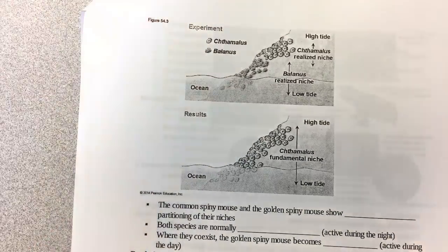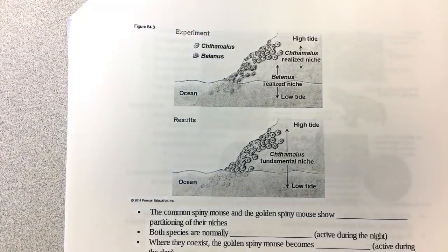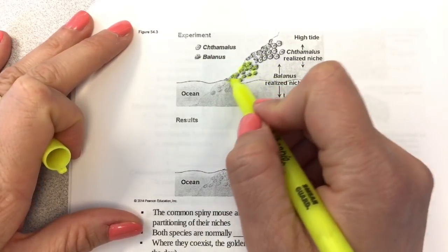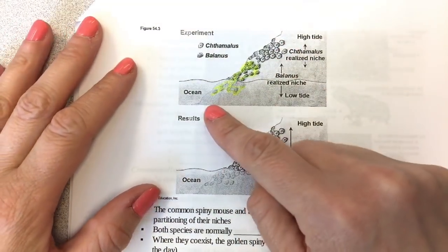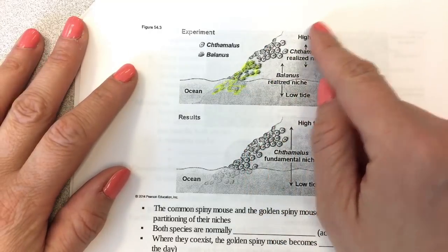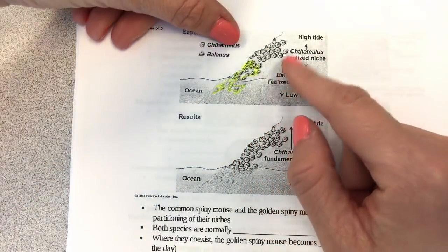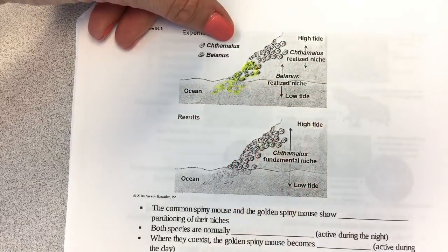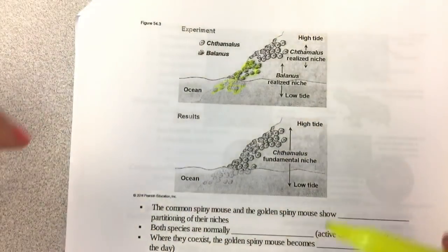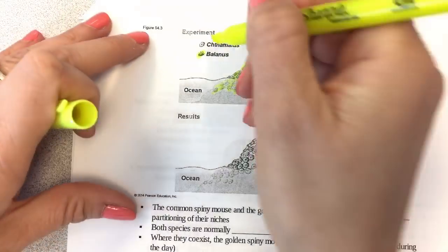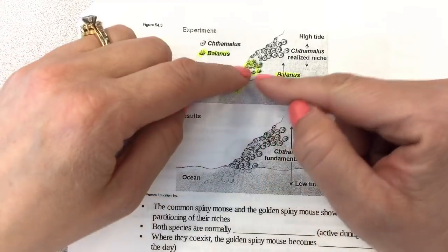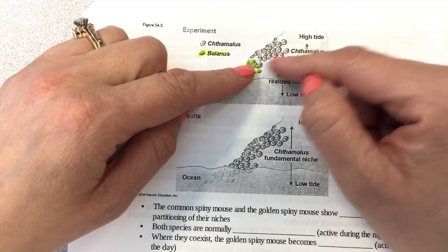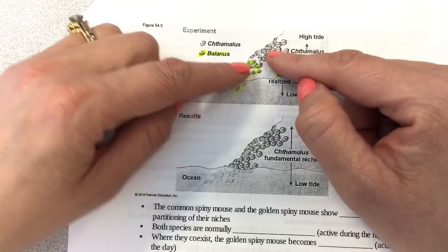Looking at two different species of barnacles in the intertidal zone where the tide goes in and out — between high tide and low tide — each species has a realized niche, which is its actual niche, because it's sharing space with the other species.